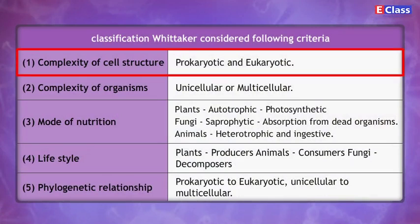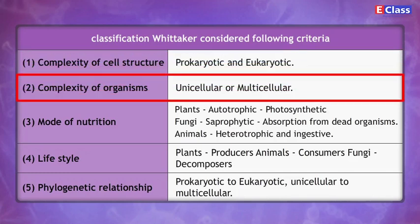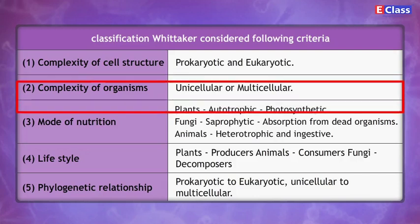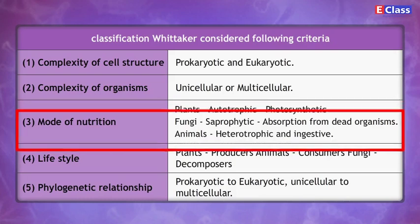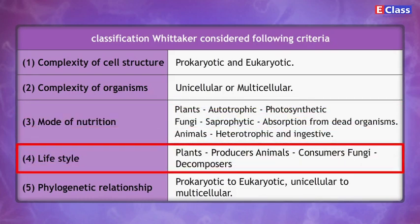Complexity of Cell Structure: Prokaryotic and Eukaryotic. Complexity of Organisms: Unicellular or Multicellular. Mode of Nutrition: Plants — Autotrophic/Photosynthetic; Fungi — Saprophytic, absorption from dead organisms; Animals — Heterotrophic and Ingestive. Lifestyle: Plants — Producers; Animals — Consumers; Fungi — Decomposers.